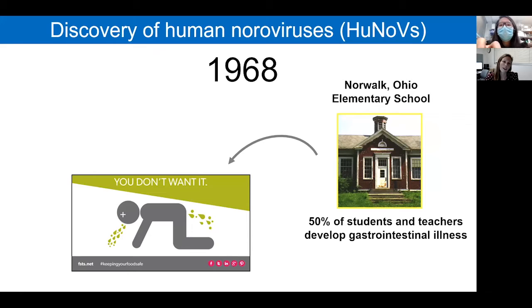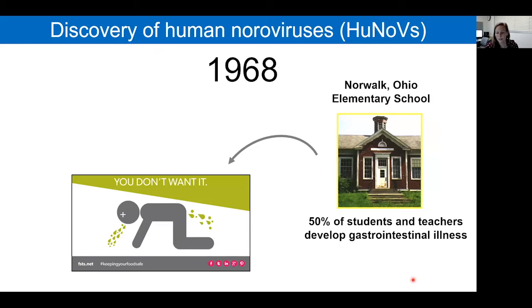Noroviruses were first discovered in 1968, when an elementary school in Norwalk, Iowa had an outbreak of gastrointestinal illness. Fifty-seven of the students and teachers developed symptoms.